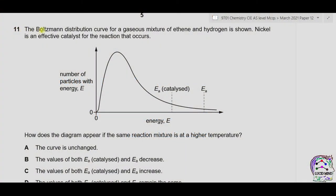Question 11. The Boltzmann distribution curve for a gaseous mixture of ethene and hydrogen is shown. Nickel is an effective catalyst for the reaction that occurs. How does the diagram appear if the same reaction mixture is at a higher temperature?